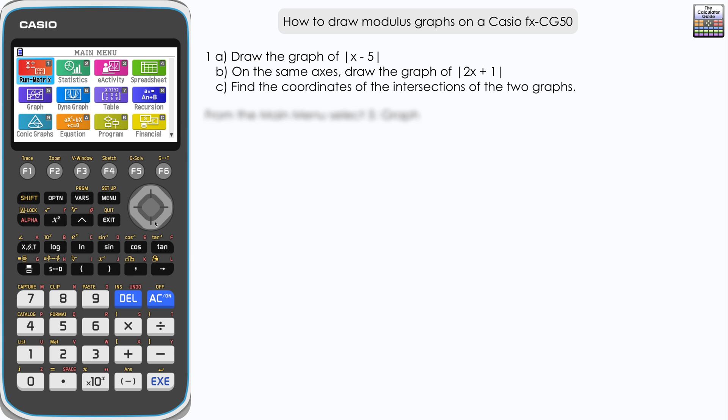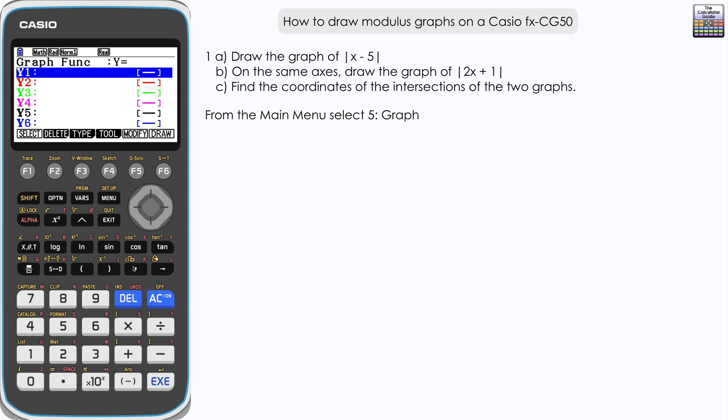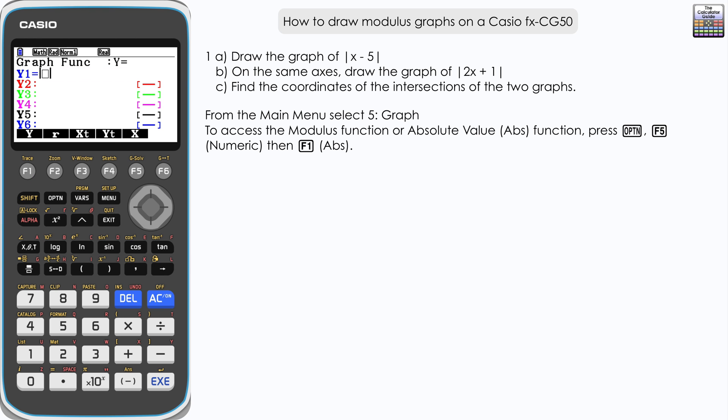From the main menu select 5 for graph. To access the modulus function, or absolute value function, press option F5 for numeric. You can see it listed here as ABS, the absolute function. Press F1.